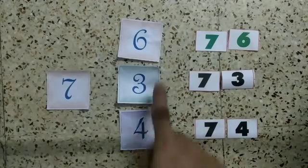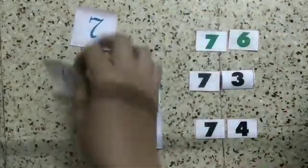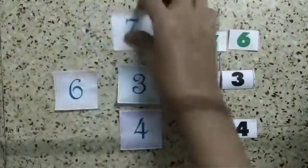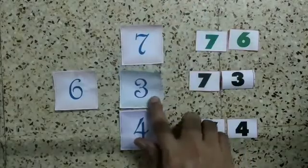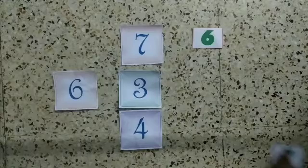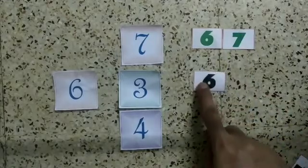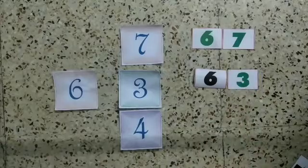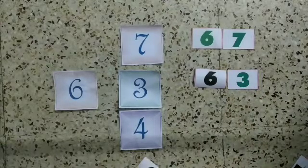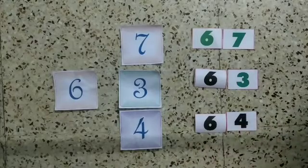So next number, possible number is 6. Now we are going to make two digit numbers out of 6. So here 6 is the first number I have to get. Now 6 and 7, 67. Next is 6 and 3, 63. Next is 6 and 4, 64.